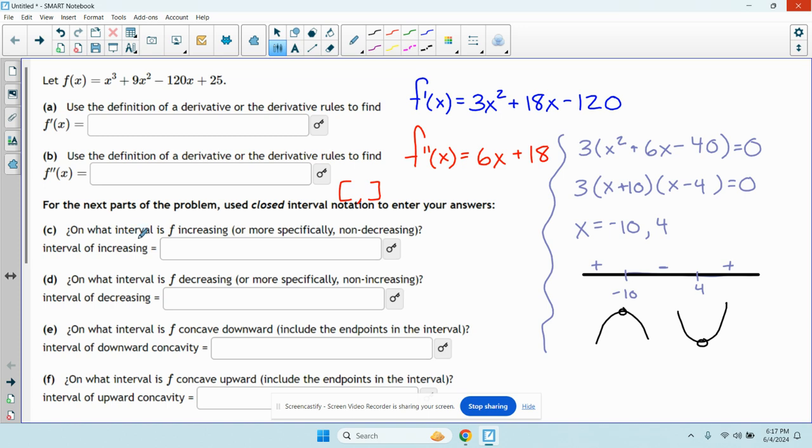So this says on what intervals is f increasing? It's increasing where the derivative is positive. Here and here. So increasing from negative infinity to negative 10, union from 4 to infinity.